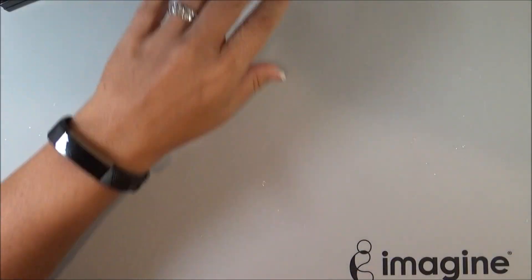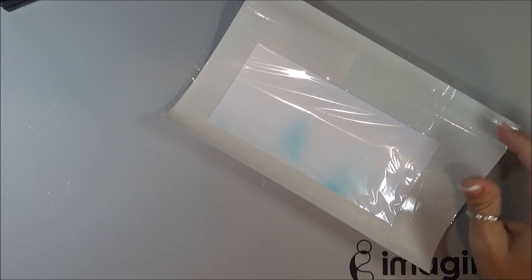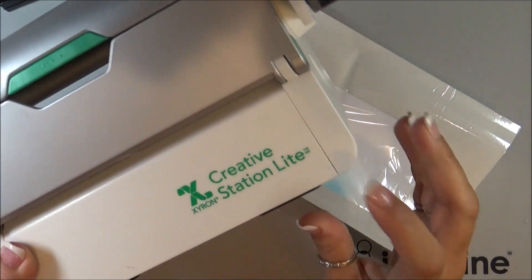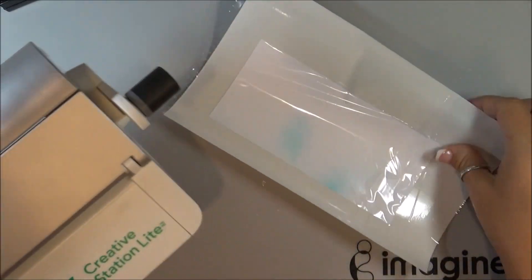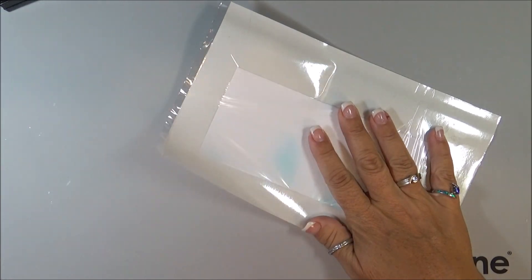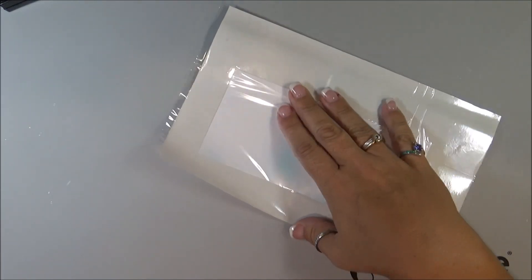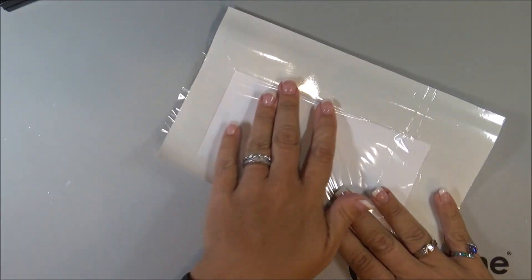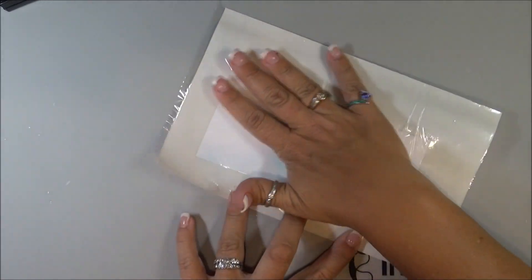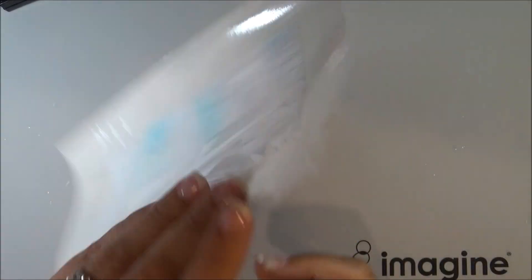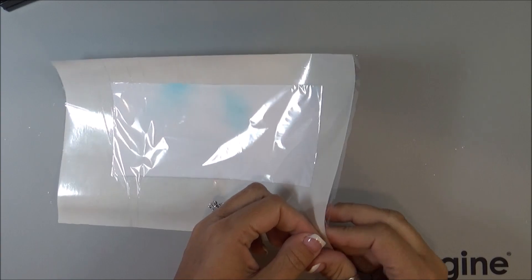So to get started, the first thing I did was using my Creative Station Lite from Xyron and using the repositionable adhesive. I just ran a scrap piece of paper through, and this is how I make my mask, masking paper, masking, whatever you want to call it, tape.